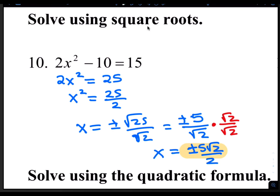Starting with number 10, we're solving using square roots. So we would have to add 10 to both sides. 10 plus 15 is 25. Then divide by 2, so x squared is 25 over 2. Now we take the square root of both sides, so x is plus or minus the square root of 25 over the square root of 2. The square root of 25 is 5. You can't leave radicals in the denominator, so multiply the top and bottom by the square root of 2. That leaves you with plus or minus 5 square root of 2 over 2 as your final answer.